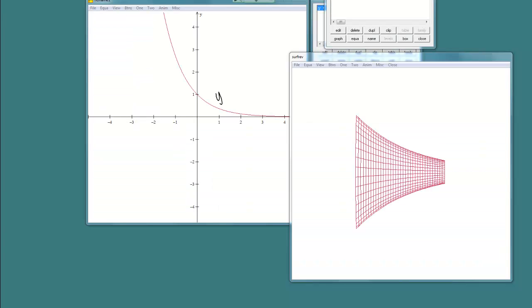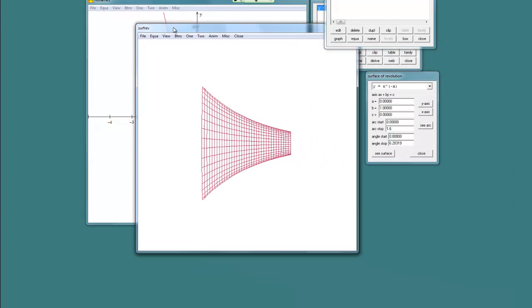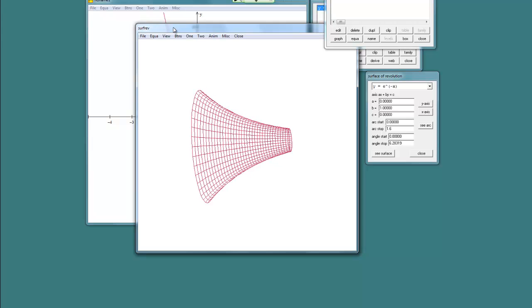So let me show you really quick what this solid would actually look like if we did this rotation. So here's my function Y equals E to the negative X. Natural log of 5 is somewhere approximately here. So here once again is our region R. And so if we rotate that around the X axis, we're going to get something that looks like this three-dimensional solid here. And this is what we're trying to find the volume of.